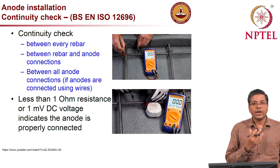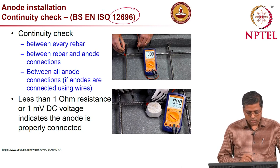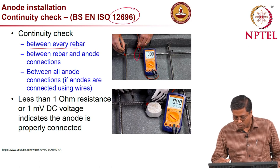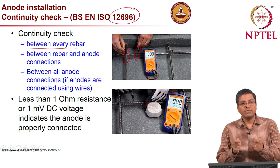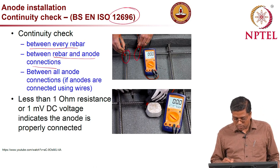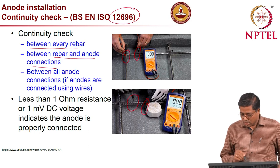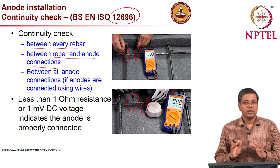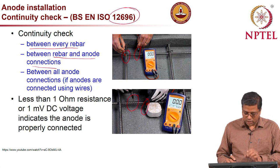How do we check that an anode will work? First, check electrical connectivity per ISO standard 12696 — connect one probe of a multimeter to one rebar and the other probe to a transverse bar, and check connectivity. Also check between the rebar and the anode connection. If resistance is very low — close to zero ohms — there is a very good electrical connection between these points.